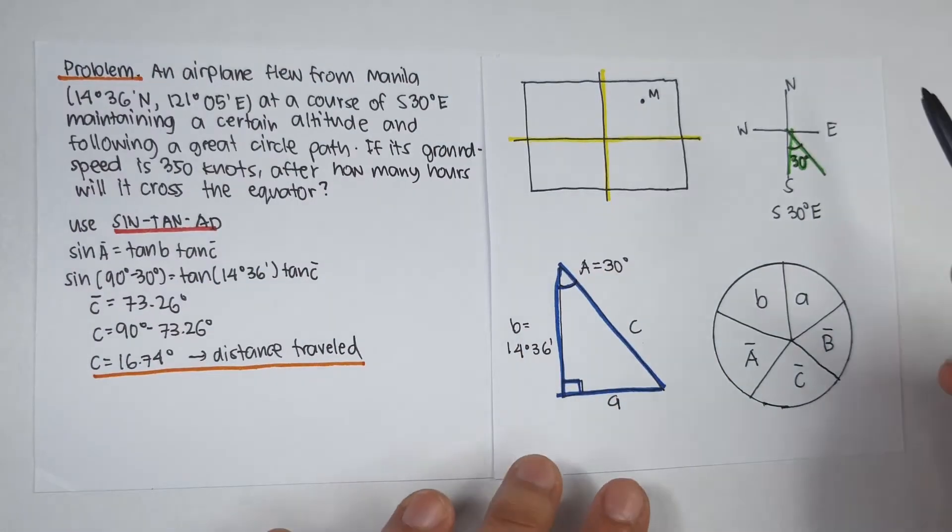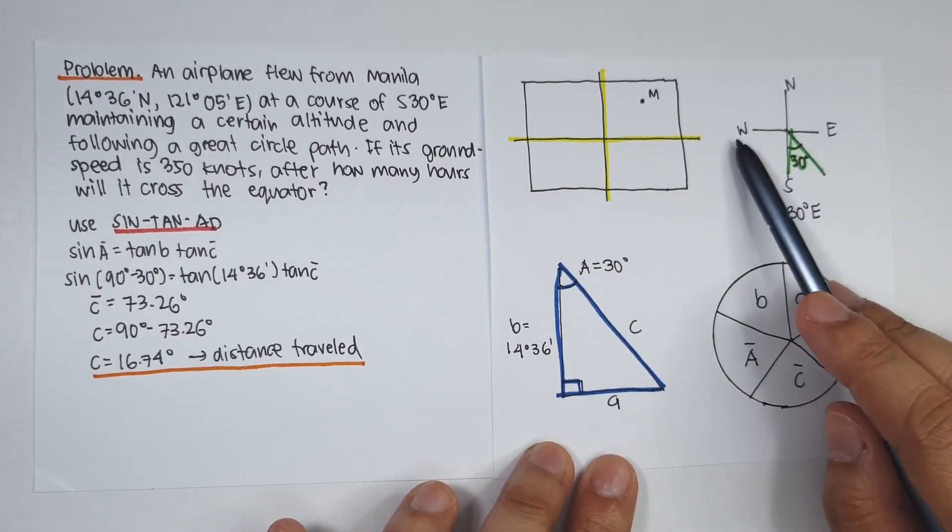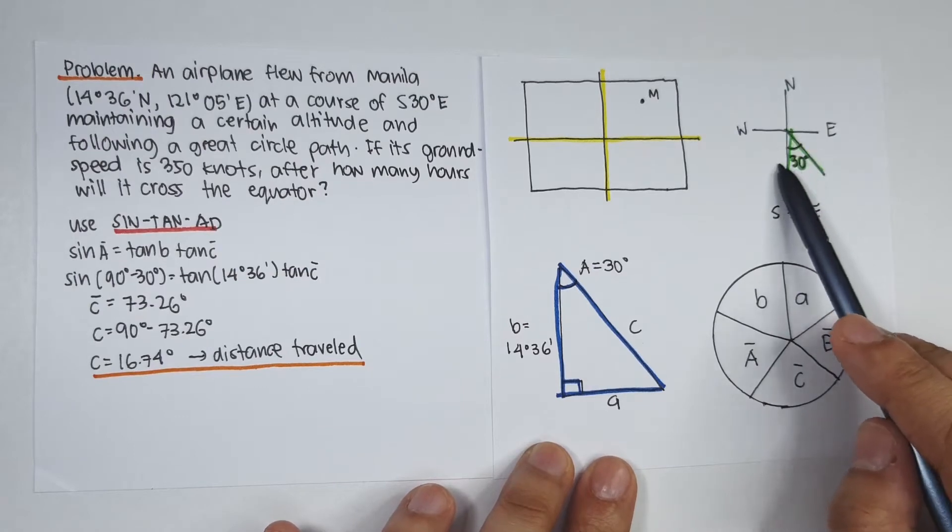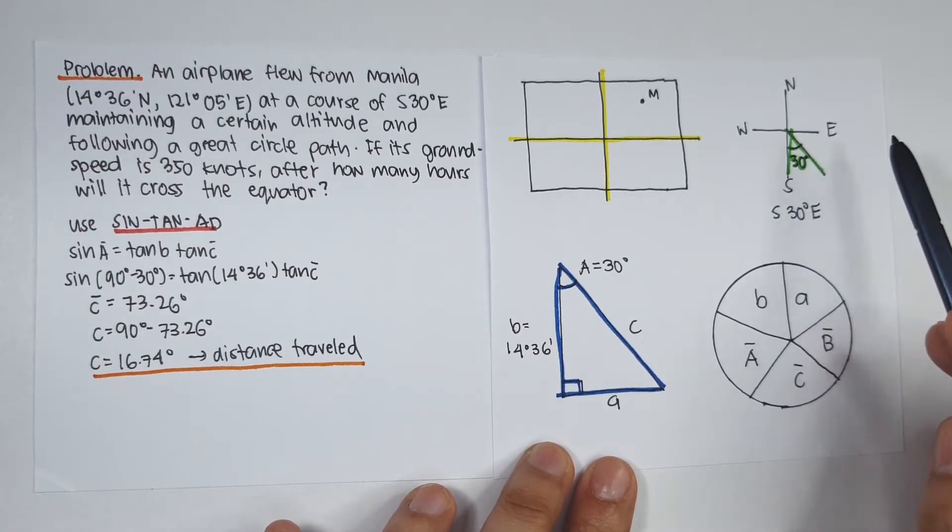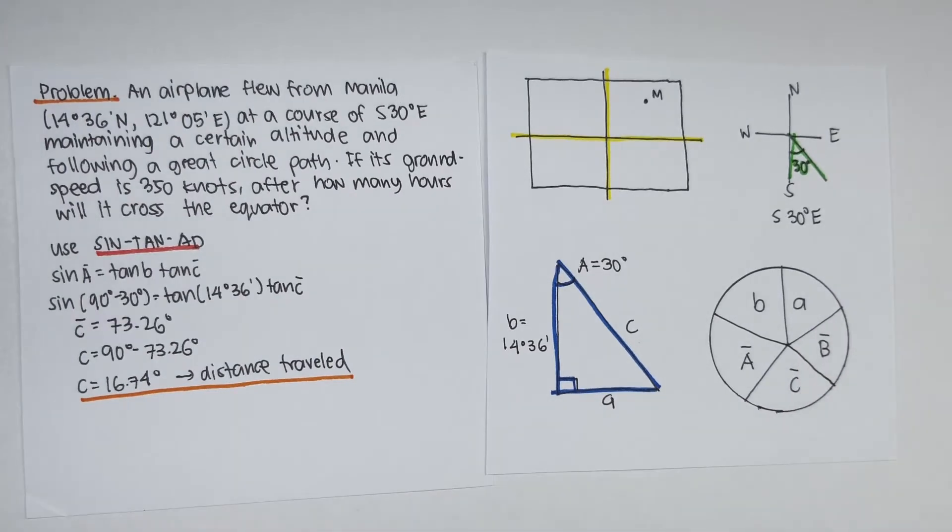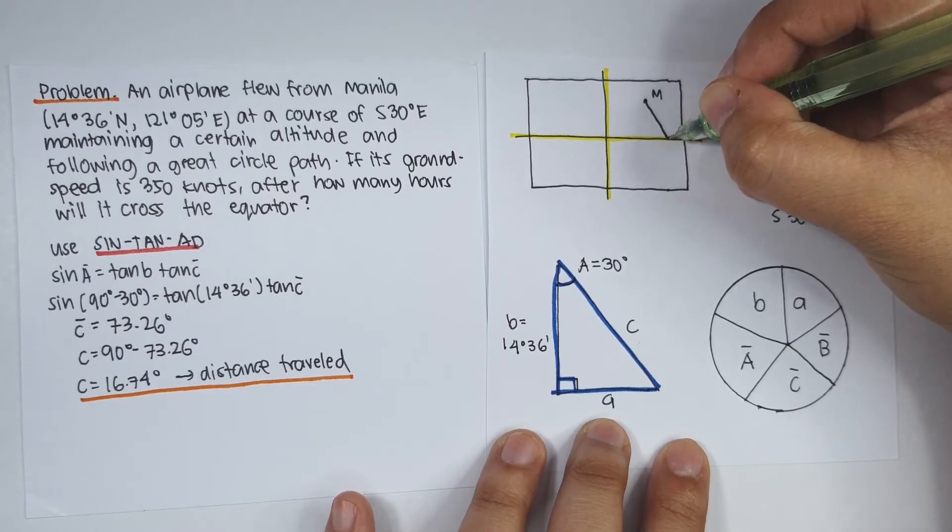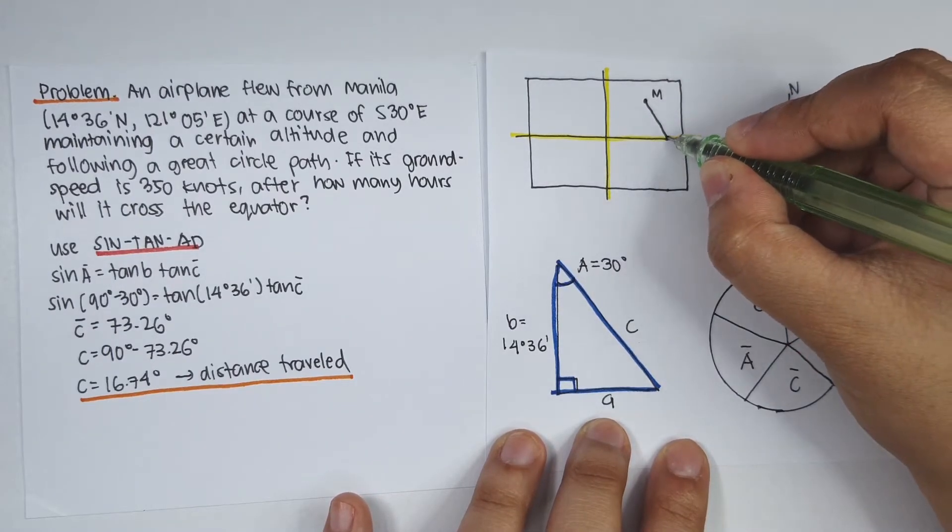There is a plane with a course of 30 degrees east of south. So if this is north, east, west, south, the angle here is 30 degrees. So this is 30 degrees east of south. So from Manila, the airplane flew with a course of 30 degrees east of south, and at a certain point crossed the equator.